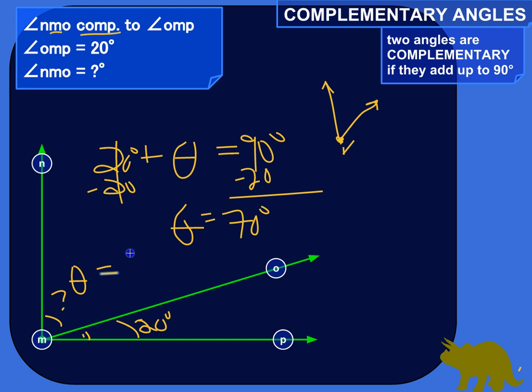So, theta is equal to 70 degrees. 70 plus 20 is equal to this 90 degree angle. And a 90 degree angle, a right angle, you can signify with a little box type thing. A little symbol like that.